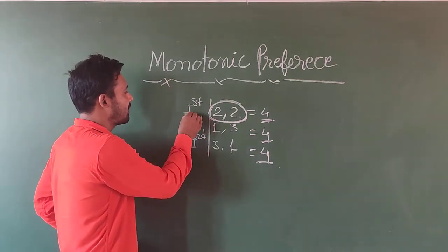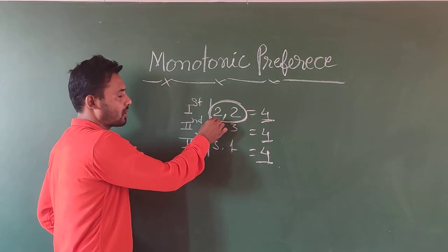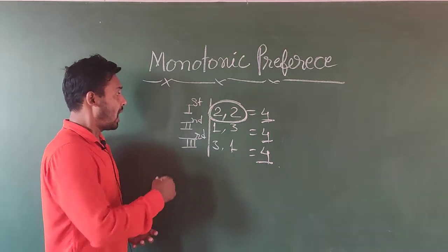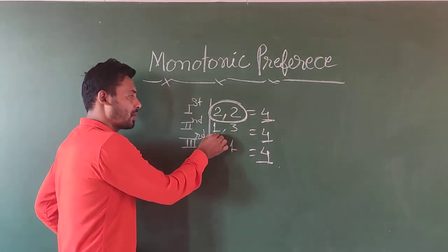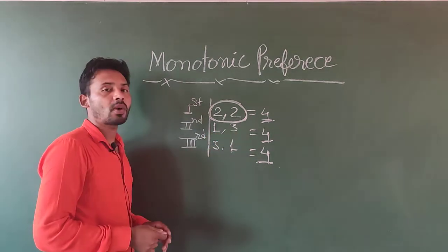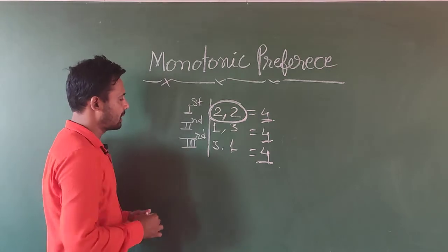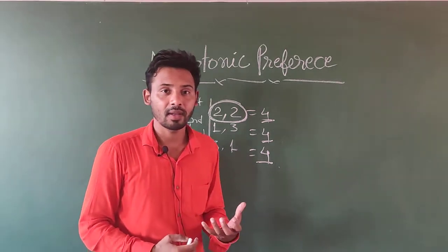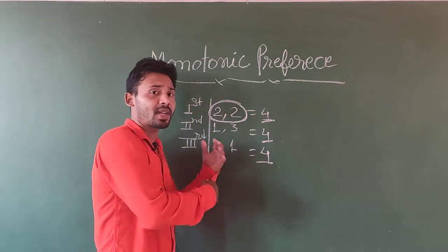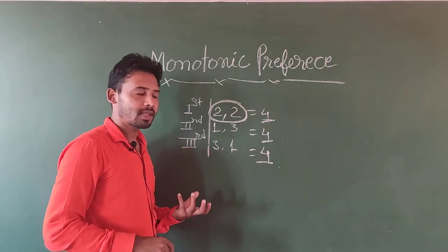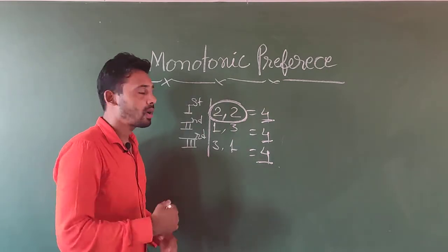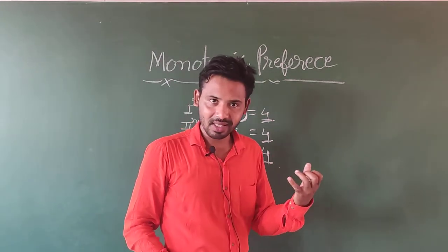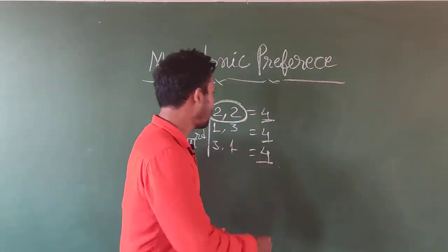Here, I have given the first choice. In the first choice I have kept two units of good x and two units of good y. In the second choice I have kept one unit of good x and three units of good y. And the third we have is three units of good x and one unit of good y. In all of these we have choices — sometimes we may consume the third choice, sometimes the second, sometimes the first one — two units of good x and two units of good y. All of them are equal actually.